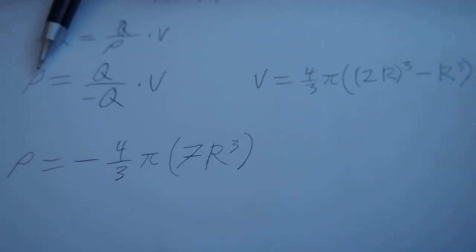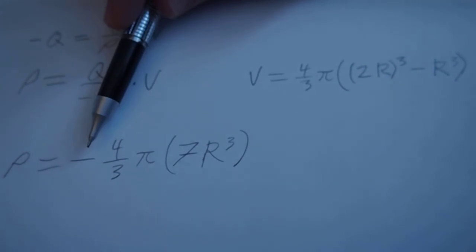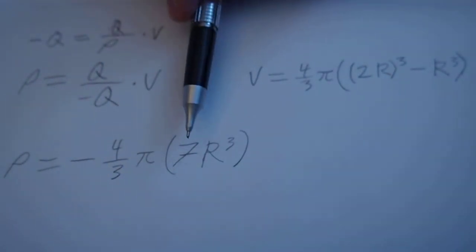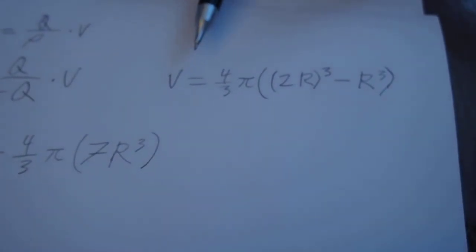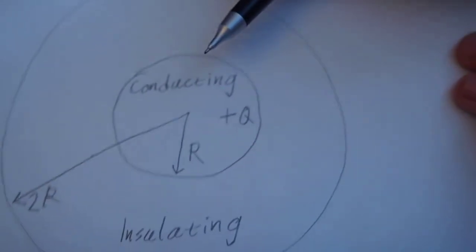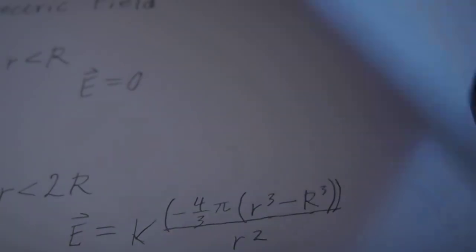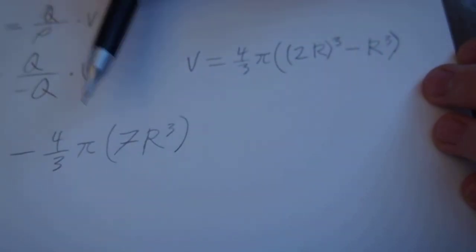So rho is going to be equal to negative Q over the volume, which is negative 4 thirds pi times 7R cubed because the volume equals 4 thirds pi times the outer shell. Here, let me show you the picture again. The outer shell minus the inner shell. So the outer radius cubed minus the inner radius cubed, and we end up with this. So that's rho.